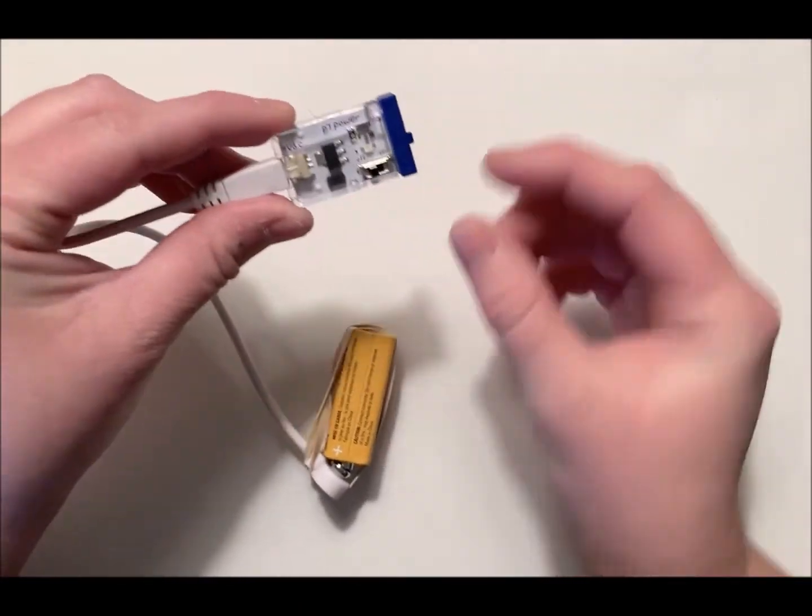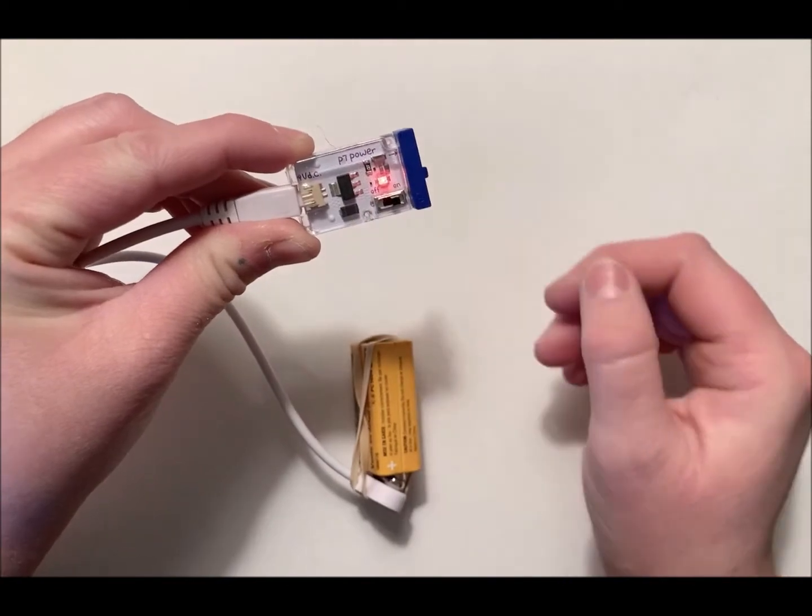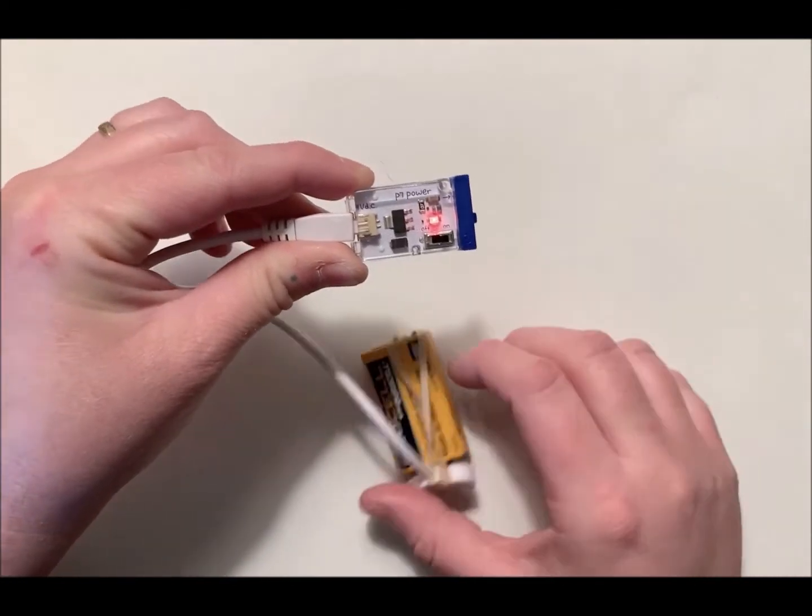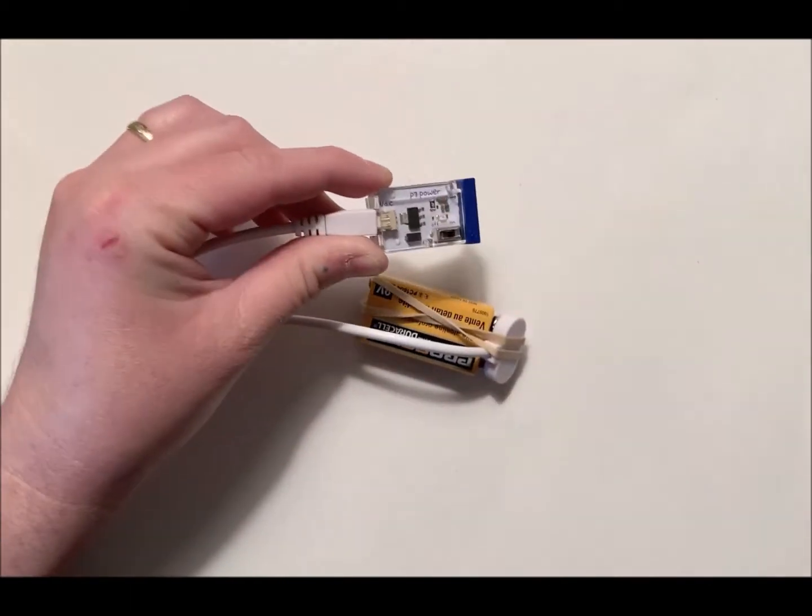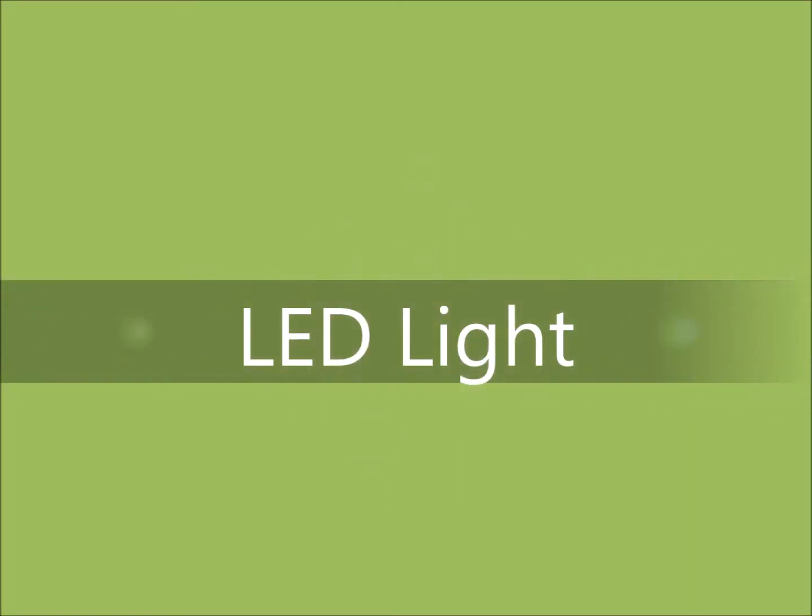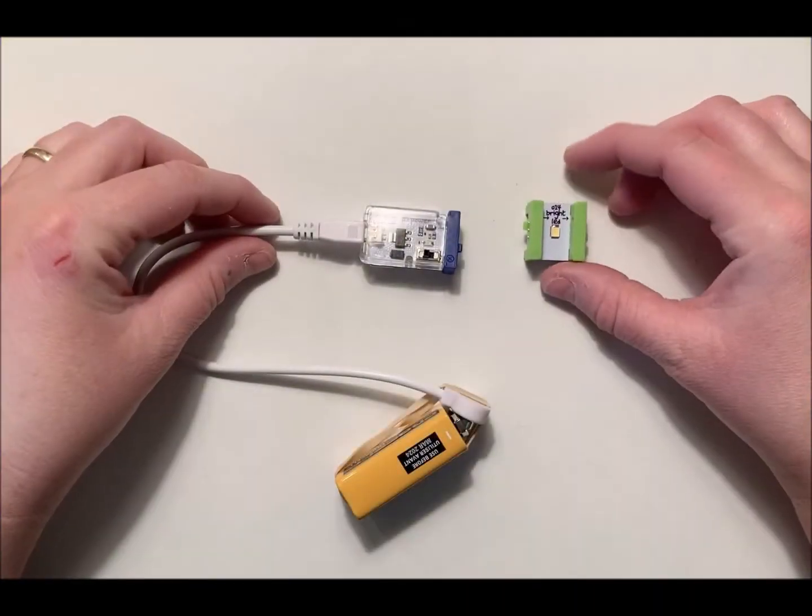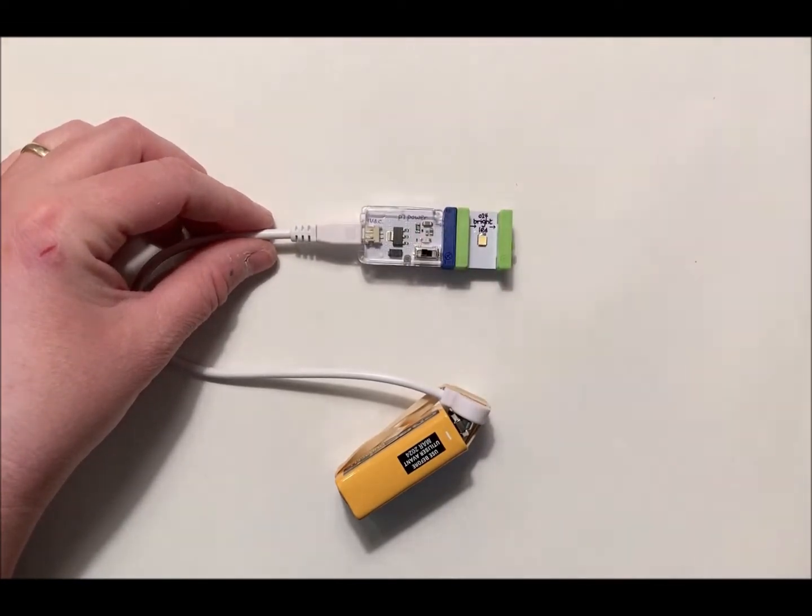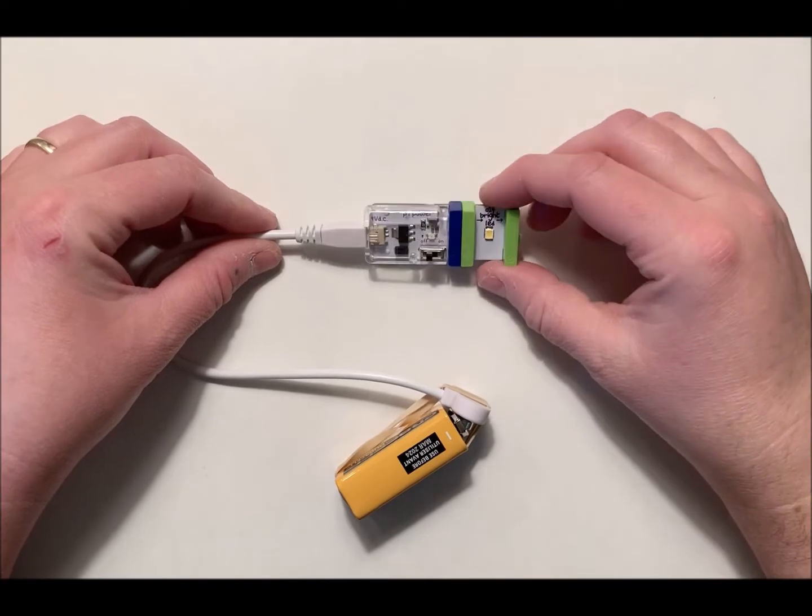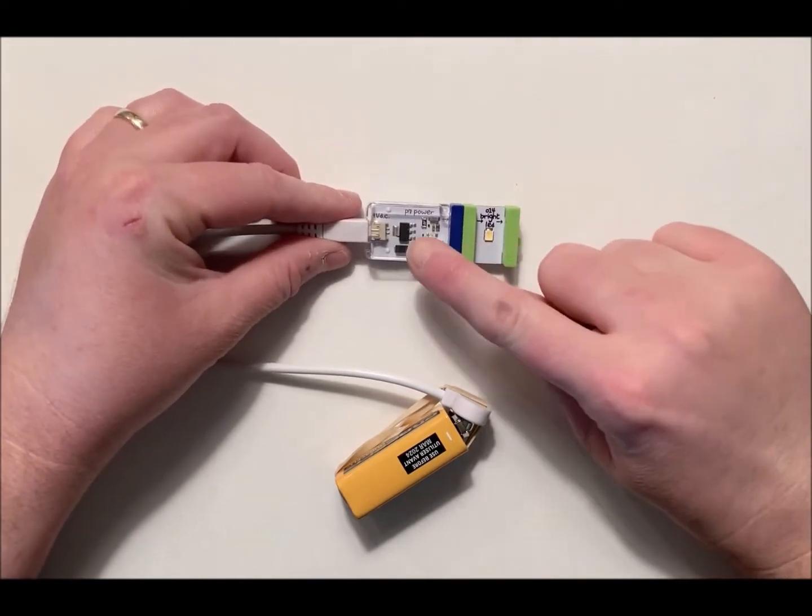Now you'll know that the power function is working if you flip the switch and you see a red light. That means that your power is on and you're ready to connect it to an output. Now the first output I'm going to show you is the bright LED light, and these actually snap together magnetically.